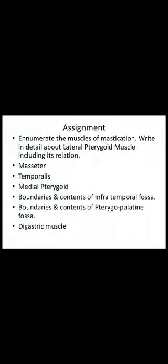Coming to the assignment: enumerate the muscles of mastication; write in detail about the lateral pterygoid muscle including its relations; and describe the masseter, temporalis and medial pterygoid — including origin, insertion, nerve supply and action of these muscles; then boundaries and contents of the infratemporal fossa; boundaries and contents of the pterygopalatine fossa; and the digastric muscle.